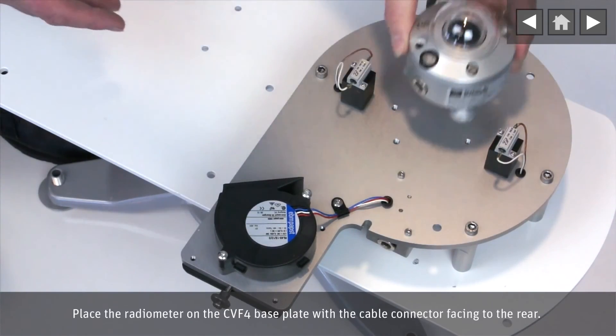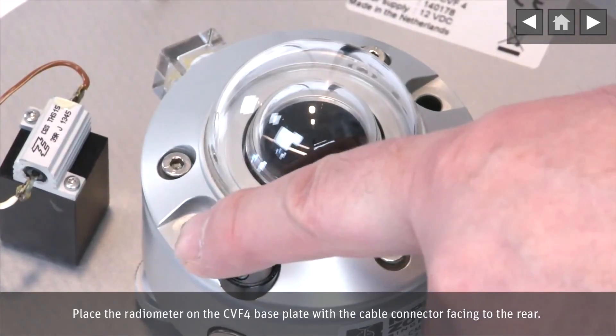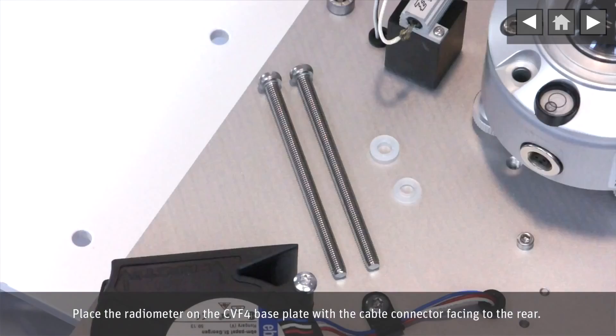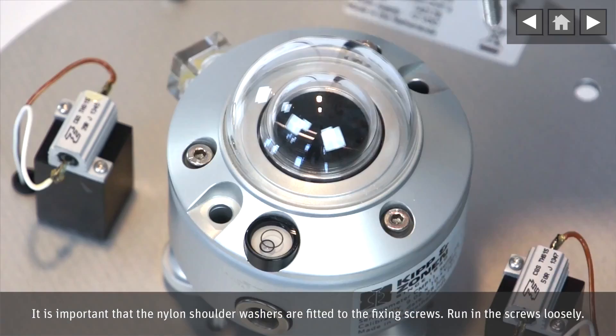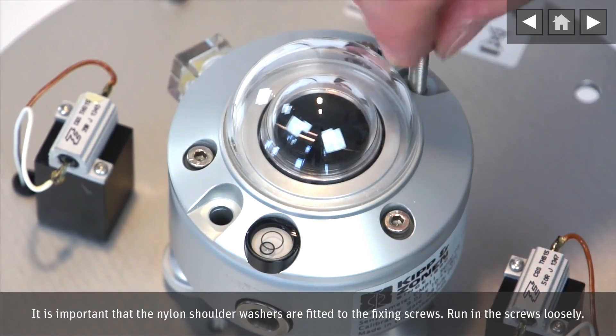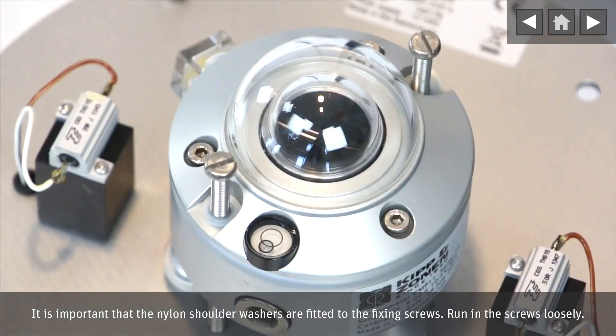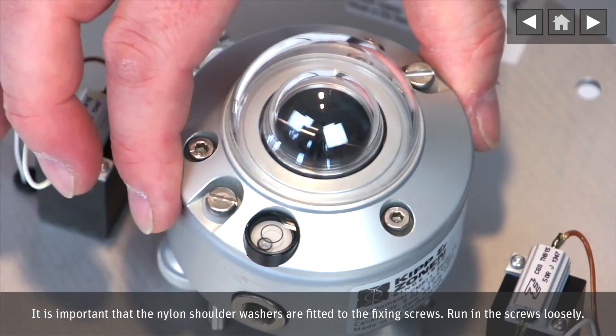Place the radiometer on the CVF4 base plate with the cable connector facing to the rear. It is important that the nylon shoulder washers are fitted to the fixing screws. Run in the screws loosely.